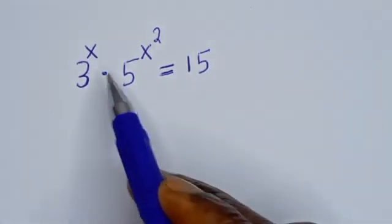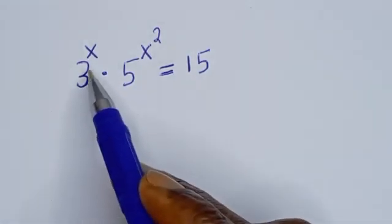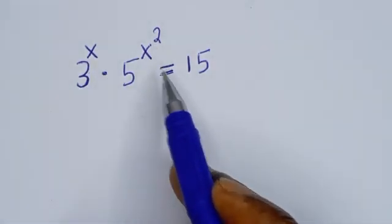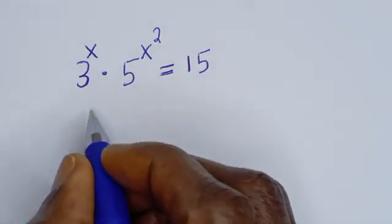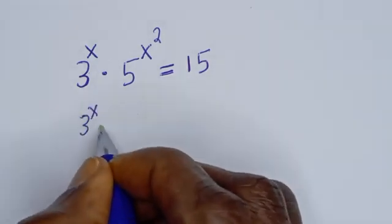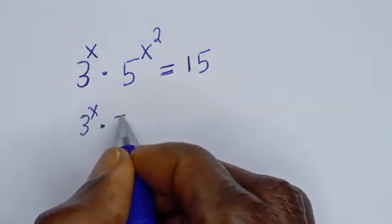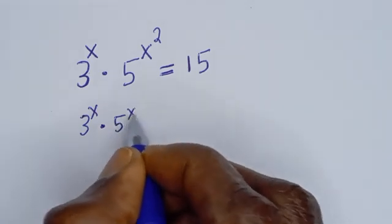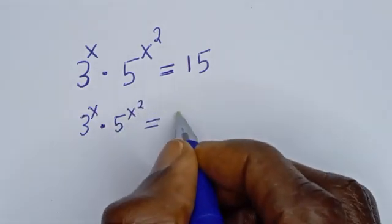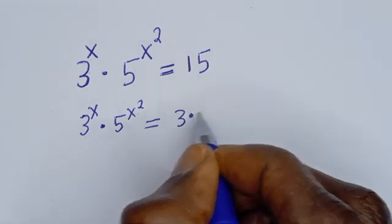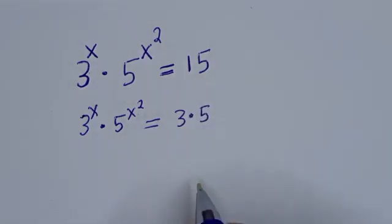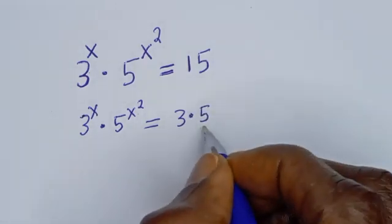Hello. How to solve for s from this equation: 3 to the power of s multiplied by 5 to the power of s squared is equal to 15. This can be rewritten as 3 multiplied by 5...